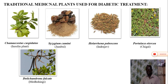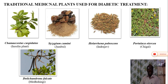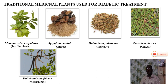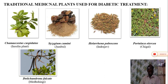Another plant is Portulaca oleracea, commonly found in agricultural fields as weeds. It is also found to have very good anti-diabetic properties and mimics insulin. The last one identified was Dolichandra falcata, commonly known as Medshingi, whose bark is known to have best insulin-mimicking properties. Many of these plants found in our area are rich in anti-diabetic properties.